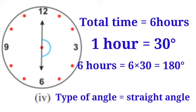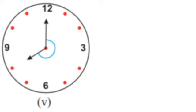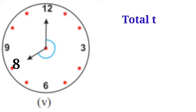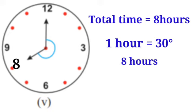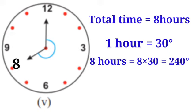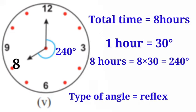Fifth clock — the short hand is at 8 and the long hand is at 12. The time period between 12 and 8 is 8 hours. 8 × 30 = 240 degrees. 240 degrees represents a reflex angle, so the type of angle is reflex angle.